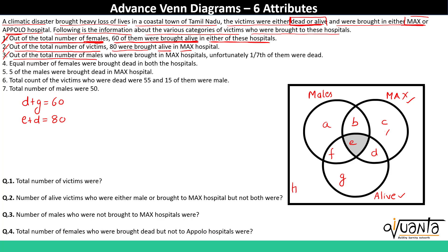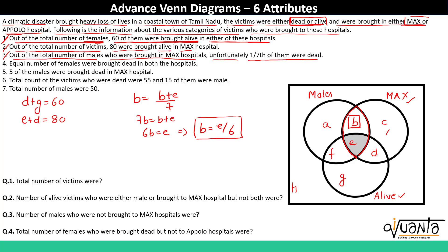The third statement: out of the total number of males brought to Max hospital, 1/7 of them were dead. Males brought to Max hospital is represented by region B plus E. So 1/7 of (B plus E) were dead, and among those only B people are dead. So B equals (B plus E) divided by 7, which gives 7B equals B plus E, then 6B equals E, or B equals E divided by 6.